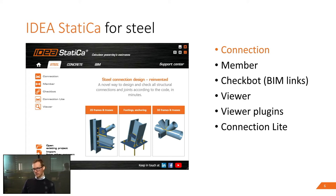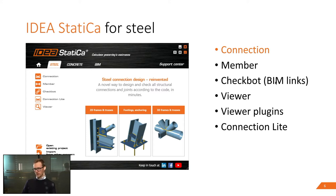In the steel module, we have Connection — the most widely used application — and then Member, where you can look at beams, columns, stability, lateral torsional buckling and column buckling. We will also look at the BIM links connecting IDEA Statica with other software. There are also viewers where you can export a connection and send it to someone without a license.